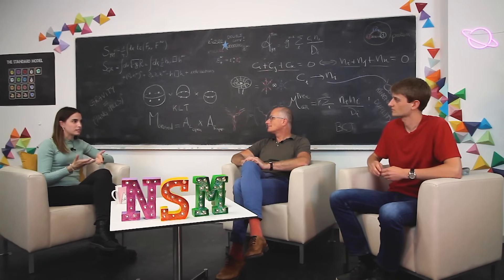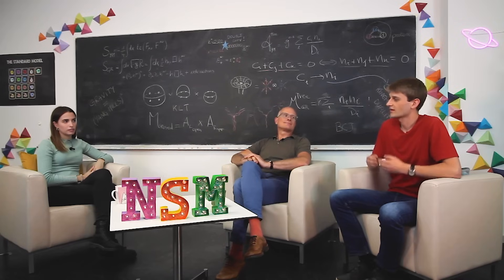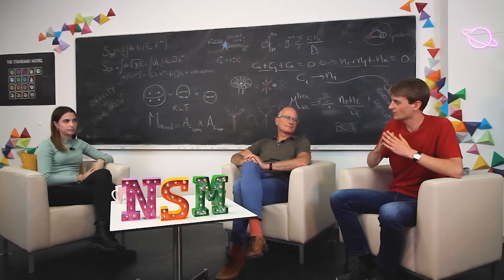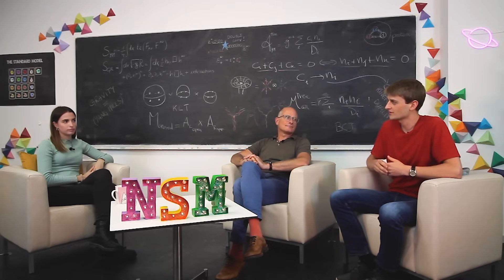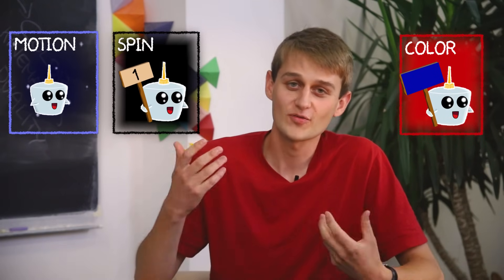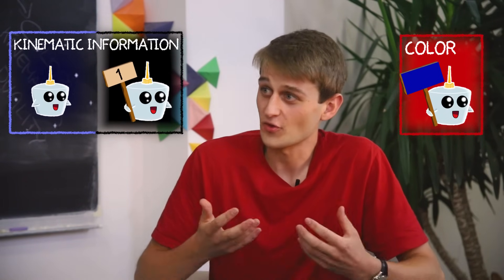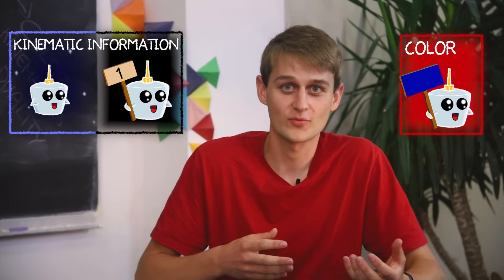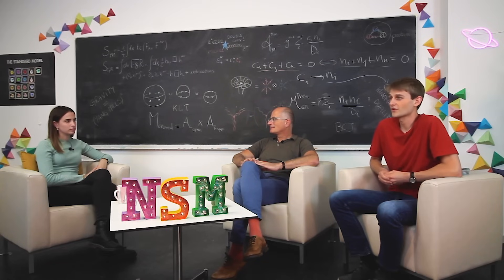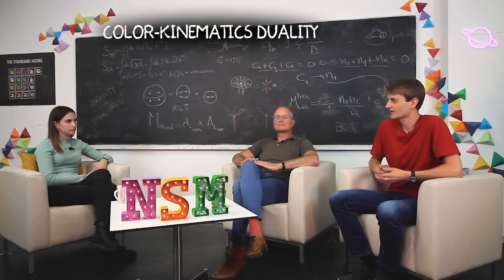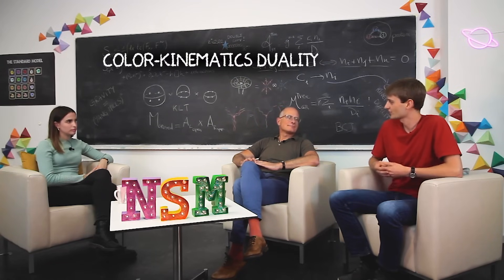But then what's the role of colour in scattering? If we are describing a collision of gluons, the prediction of what happens depends on two things. On the one hand, we have the colour of the involved gluons, and on the other hand, their precise motion and spin. The precise motion and spin of the particles are together called the kinematic information. And it turns out that, surprisingly, the colour information of the process and the kinematic information have exactly the same structure. This remarkable fact is called the colour-kinematics duality, and it allows for the double copy.